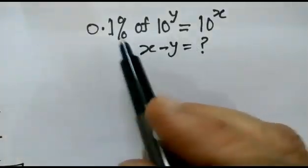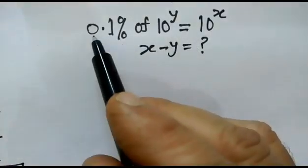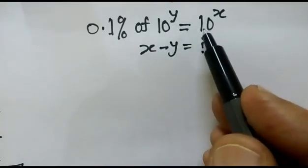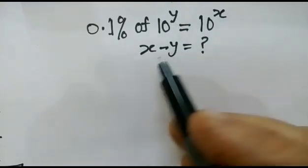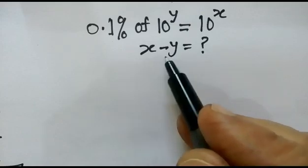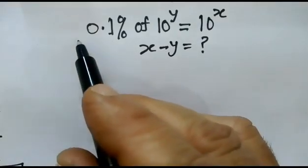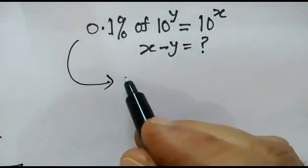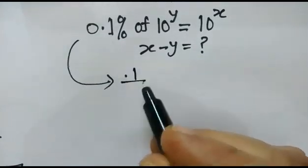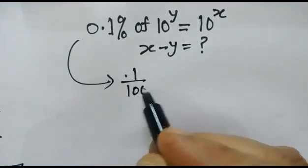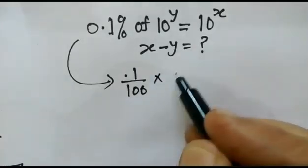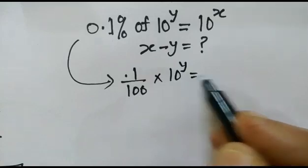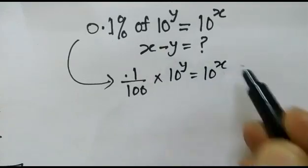Hi friends, we have given 0.1% of 10 to the power y is equal to 10 to the power x. So we have to find out the value of x minus y. So 0.1% can be written as 0.1 over 100, into 10 to the power y is equal to 10 to the power x.